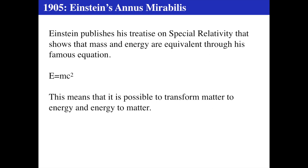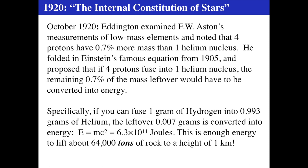In 1905, Einstein published special relativity and found that mass and energy are the same thing through E = mc². It's possible to transform matter into energy and energy into matter. Every piece of matter contains an equivalent amount of energy — you multiply its mass by c² to get the total energy stored if it were completely converted.